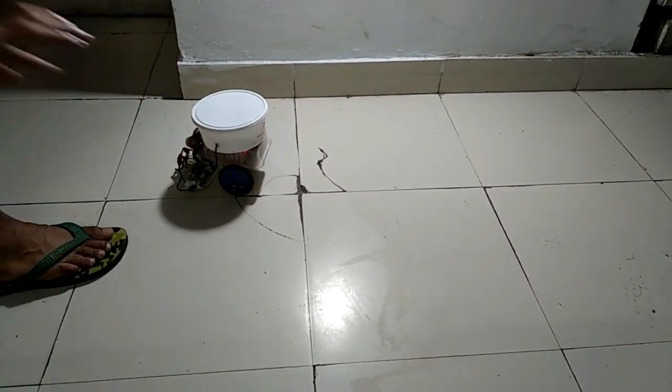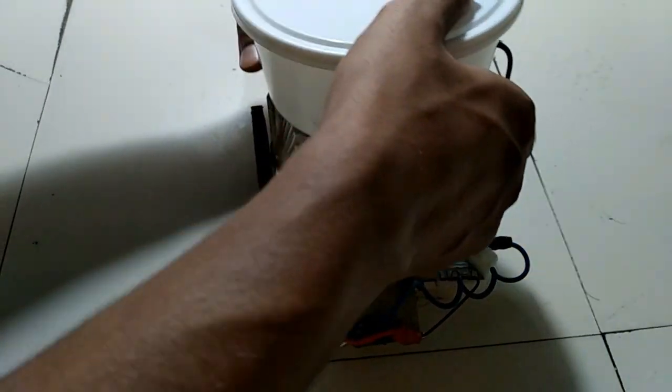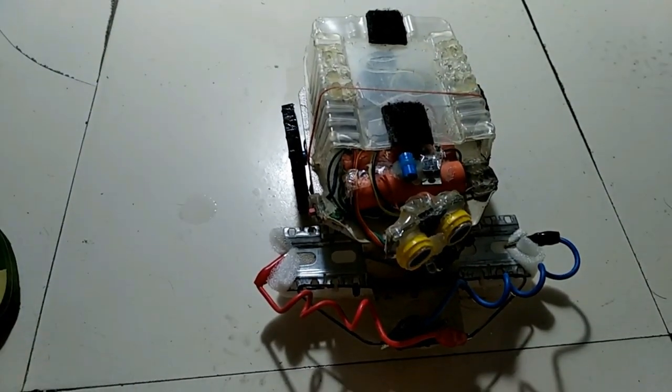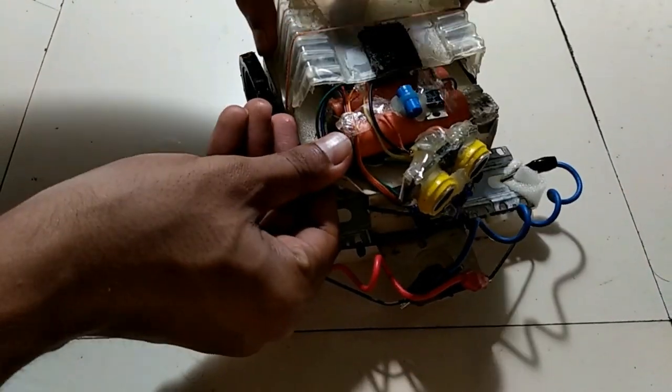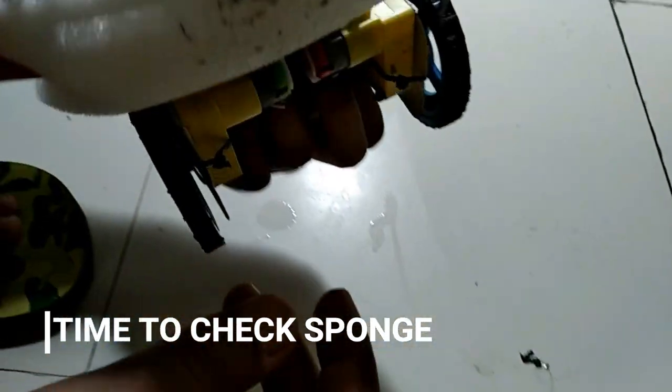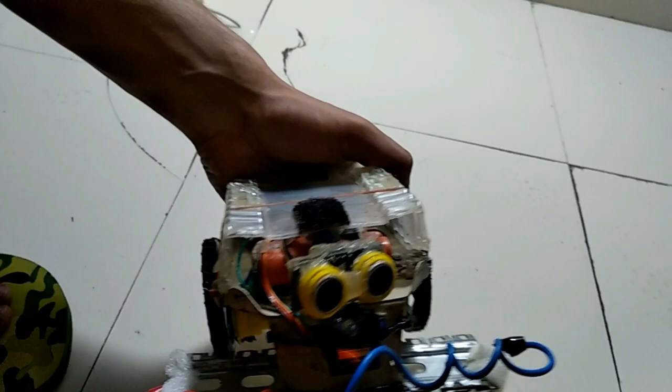Well sometimes it fails due to its high weight and velocity. Otherwise it works fine. Now removing the tank. You can see the sponge for the signs of dust. That means it works.